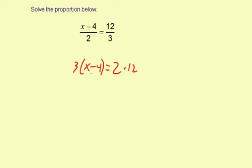Let's go ahead and distribute here. It's going to be 3x, and then minus 3 times 4, which is negative 12. So 3x minus 12 equals 2 times 12, which is 24.